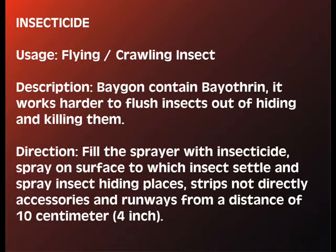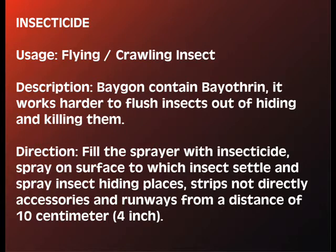Insecticide. Usage: Flying and crawling insects. Description: Works harder to flush insects out of hiding and kill them. Direction: Fill the sprayer with insecticide, spray on surfaces where insects settle and spray insect hiding places, strips, and runways from a distance of 10 cm.